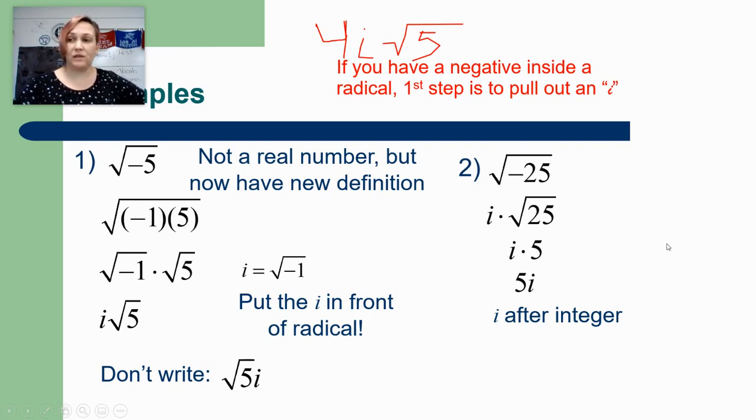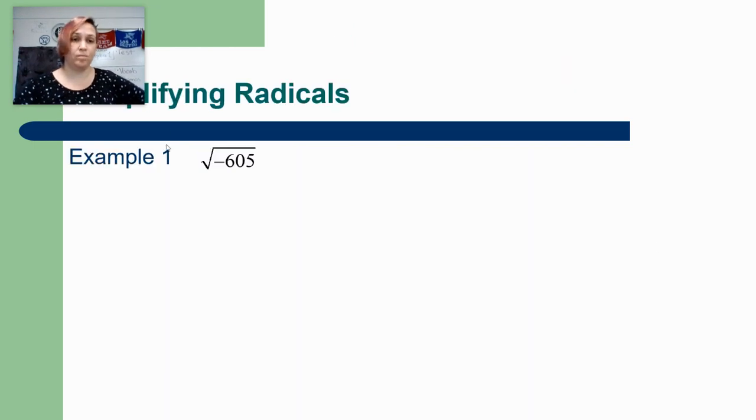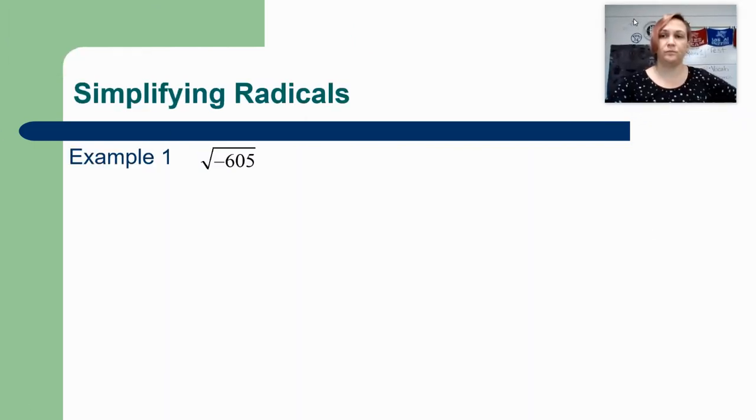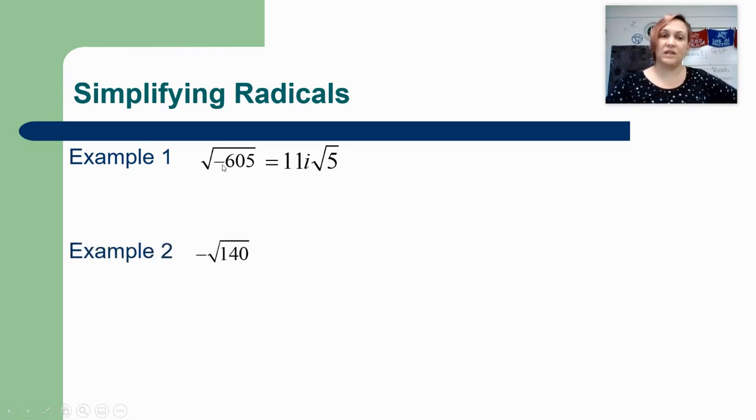Really quickly let's look back at the examples from the first video. So I changed them a little bit. So in this first example I made it a square root of negative 605 and that would change our answer by putting an i as part of the answer. So instead of 11 rad 5 it's 11 i rad 5 because of the negative inside the square root.